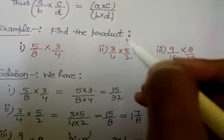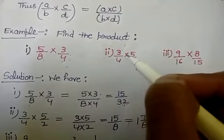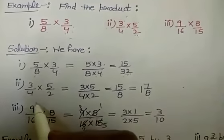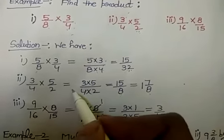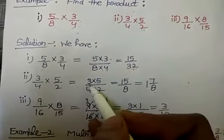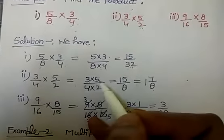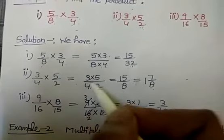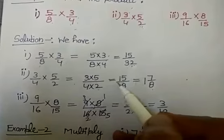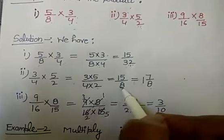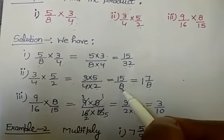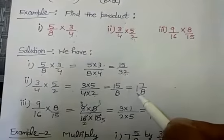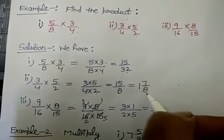Similarly, the second example: 3 upon 4 multiplied by 5 upon 2. So, 3/4 into 5/2 equals the product of their numerators 3 into 5, upon the product of the denominators 4 into 2, giving 15 upon 8. Since 15/8 is an improper fraction, we convert it to a mixed number: 1 whole 7 upon 8.